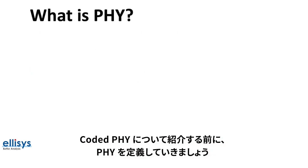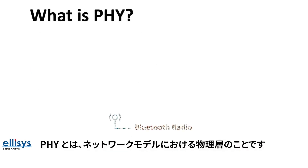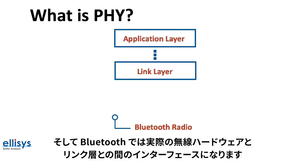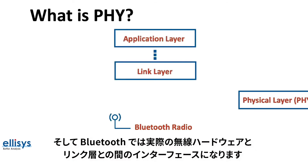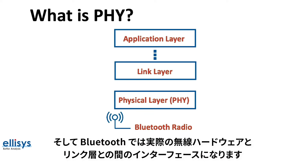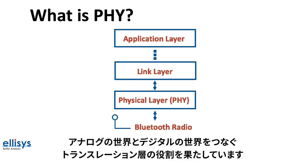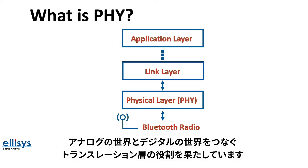Before we learn about what Coded PHY is, we need to define what PHY is. PHY refers to the physical layer in a network model, and in Bluetooth it's the interface between the actual radio hardware and the link layer — in other words, it acts as a translation layer between the analog world and the digital world.